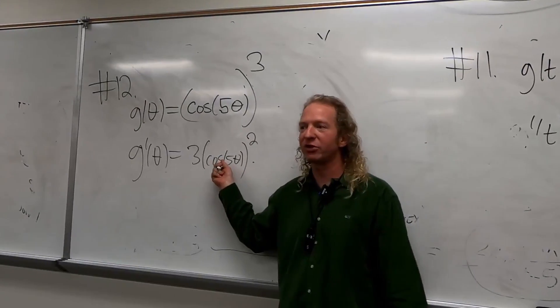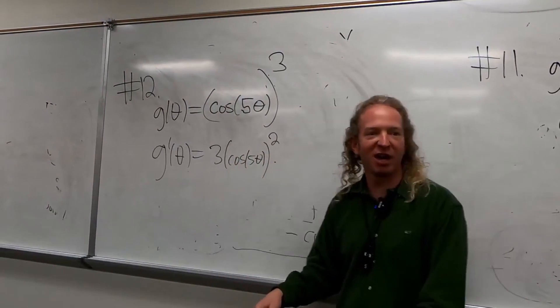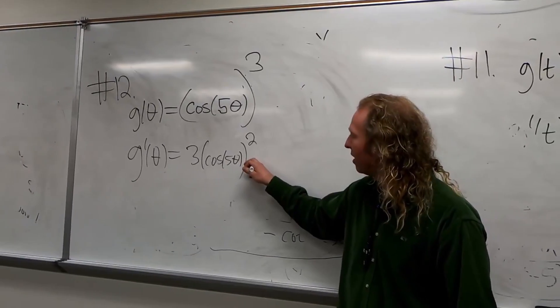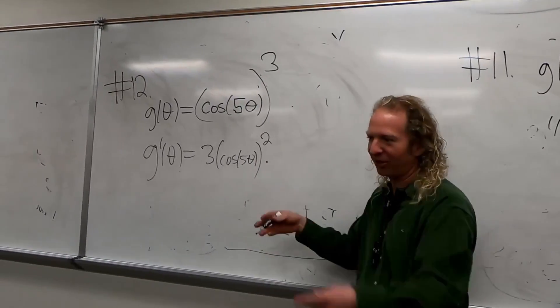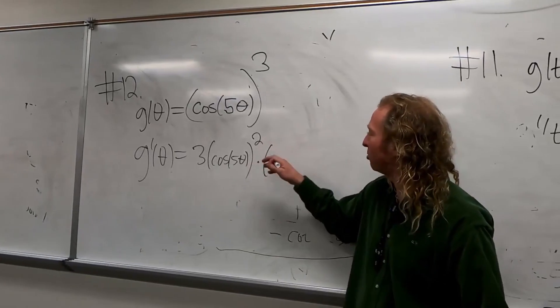Times, what's the derivative of cosine? Negative sine. Negative sine. So when you do this, by the way, I noticed Ethan did it right. Sorry, I'm just calling out Ethan. But I noticed sometimes people do it wrong.